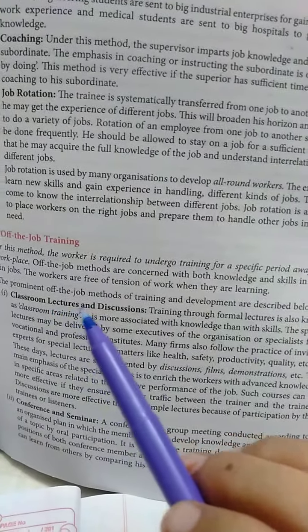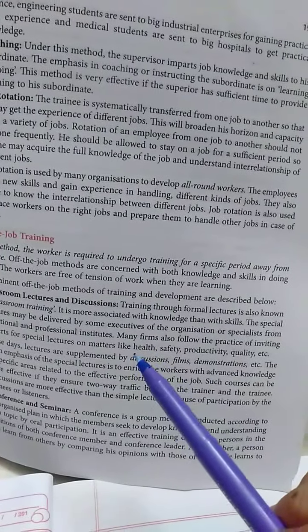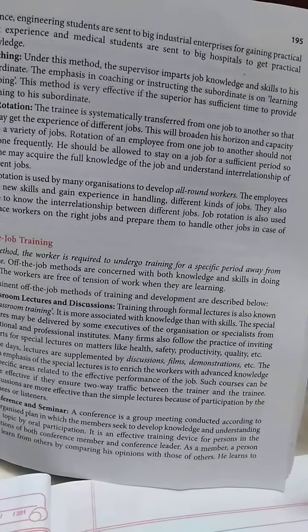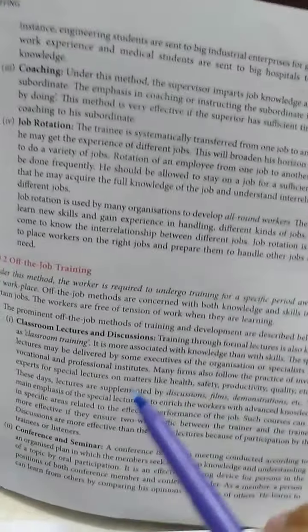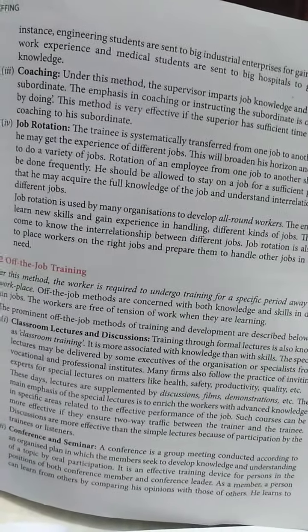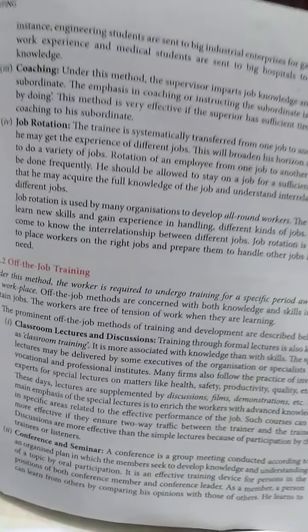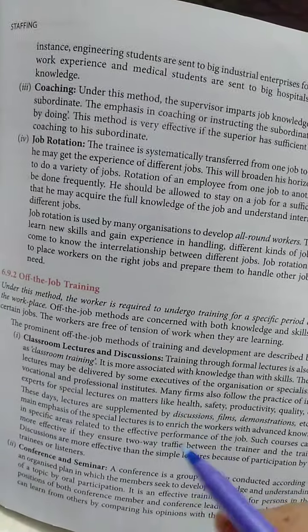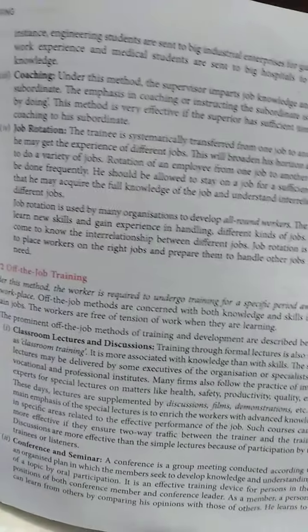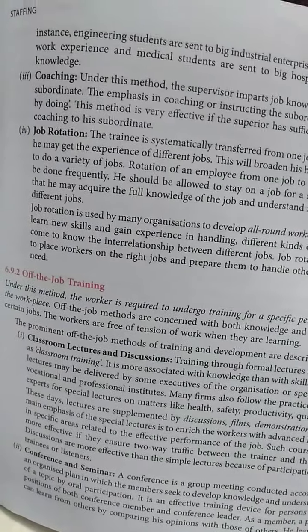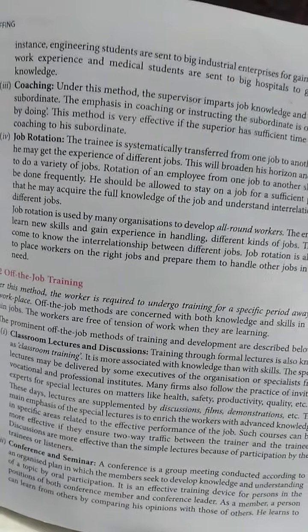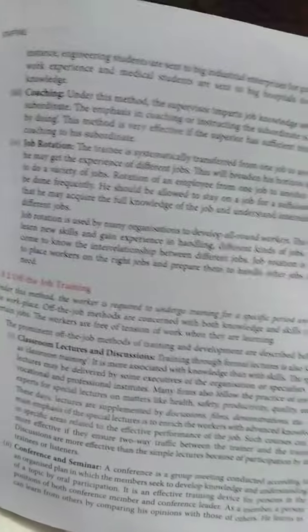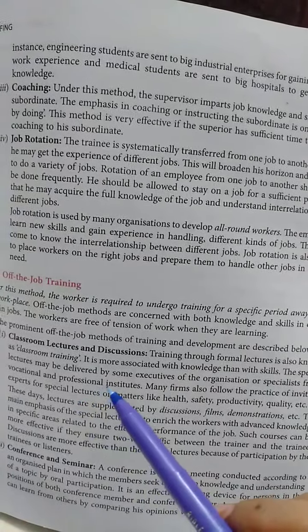The prominent off-the-job methods of training and development are: first is classroom lectures and discussions. Formal lectures diye jaate hain — training through formal lectures, jise hum kehte hain classroom training. Ismein knowledge diya jaata hai aur skills. Machine pe kaam karte hain — kuch seekh raha hai, skills ho gaya. Padh raha hai, samajh raha hai, seekh raha hai — that is knowledge.